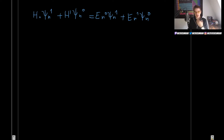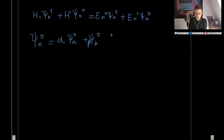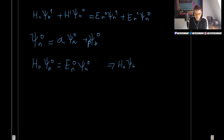But now comes the difference, because now we are going to allow our states Psi_N0 — the unperturbed state — to be a degenerate state. This means that we are going to have two states, Psi_A and Psi_B, and we will have a linear combination of them that forms our general state Psi_N0. Each one of these states will have the same energy, so the Hamiltonian acting on them gives us the same energy. This is of course what it means to be degenerate in quantum mechanics.